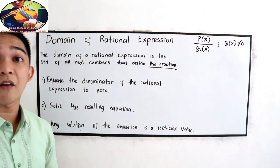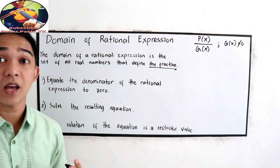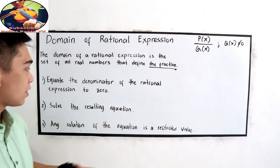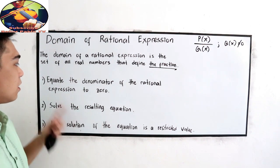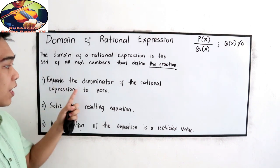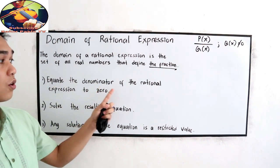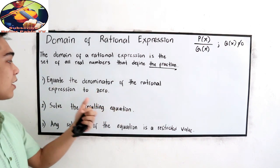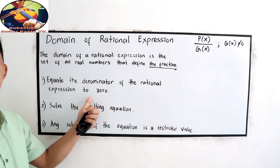To find the domain, we have three basic steps. Number one: equate the denominator of the rational expression to zero.